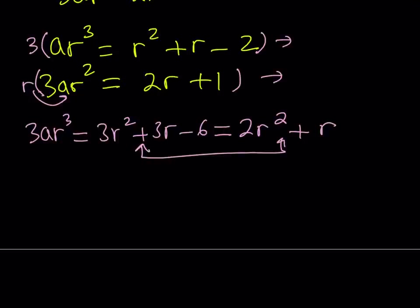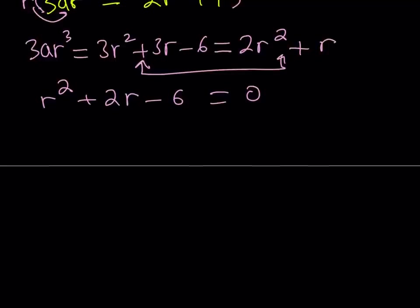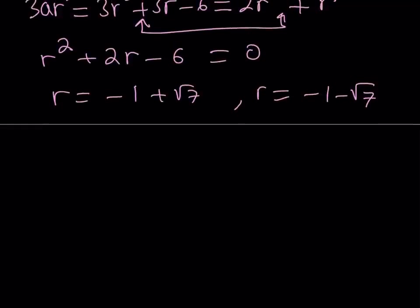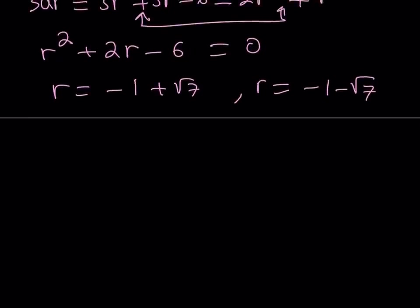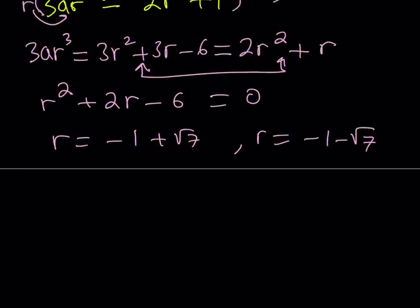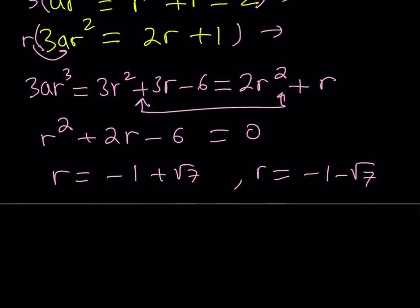If you put everything on the same side you're going to get a very nice equation. This equation is very easy to solve — you can use the quadratic formula or completing the square. It's not factorable into rationals, but whatever you do you're going to get r equals negative 1 plus root 7 and r equals negative 1 minus root 7. We could also use what's known as the Portion-Low method — maybe we'll talk about that later. So these are the r values, but I need the a values.